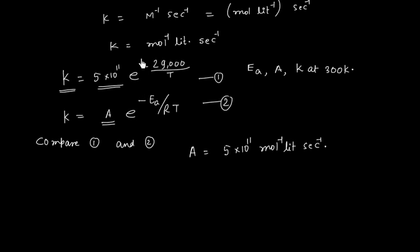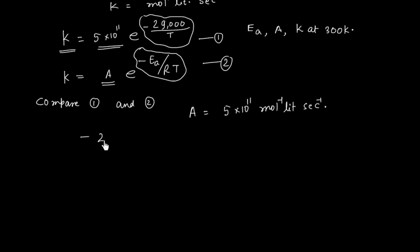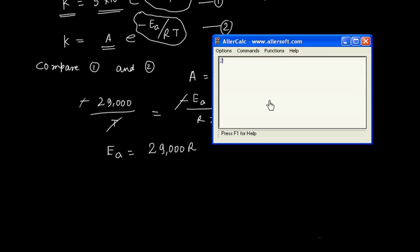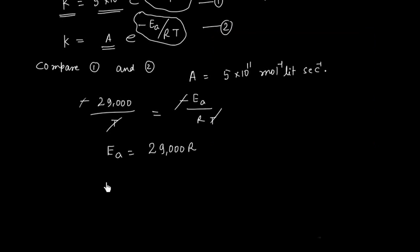For the activation energy, we compare the exponential terms — these two terms have to be equal. From this comparison, Ea equals 29000 times R. Calculating: 29000 times 8.314 gives 241.106 kJ per mole.